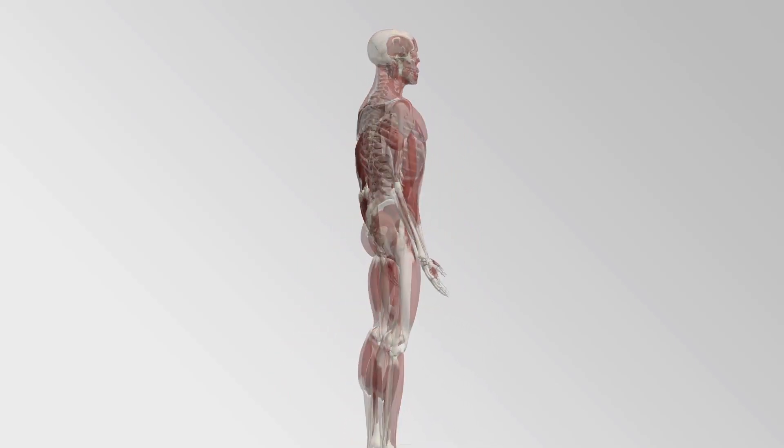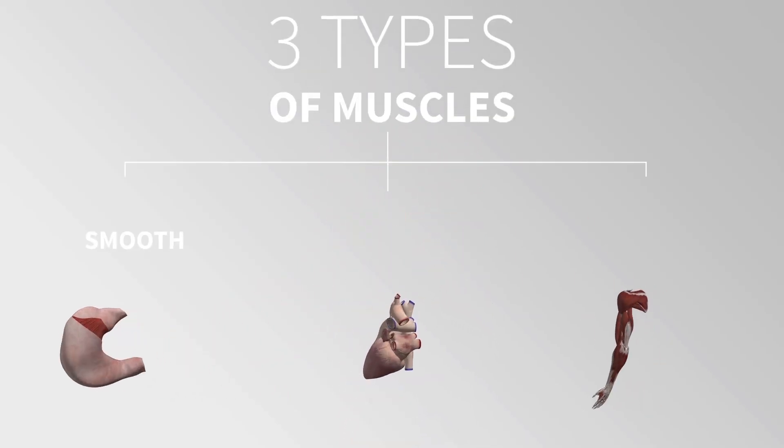Three types of muscles are contained within the human body: smooth, cardiac, and skeletal muscles.